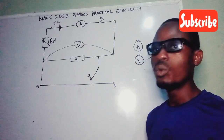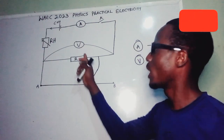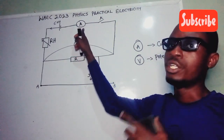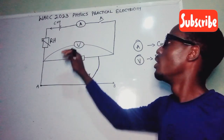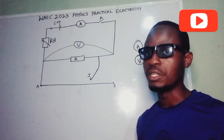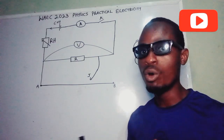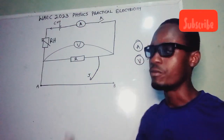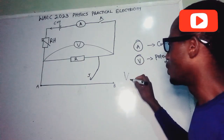We can see that a lot of resistance has been offered to the current, so more work must be done to push it — that is why the potential difference will be high while the ammeter reads a low current. Despite the high value of potential difference, we still have a lower value of current because there are many resistors connected.